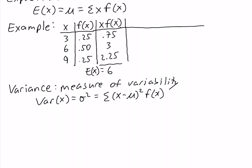The next column we'll add is the difference between the values and the expected value. The expected value is 6, so we have 3 minus 6 equals negative 3, 6 minus 6 equals 0, and 9 minus 6 equals 3. The next column is going to be the square of the previous column — x minus mu squared. Negative 3 squared is 9, 0 squared is 0, and 3 squared is 9.